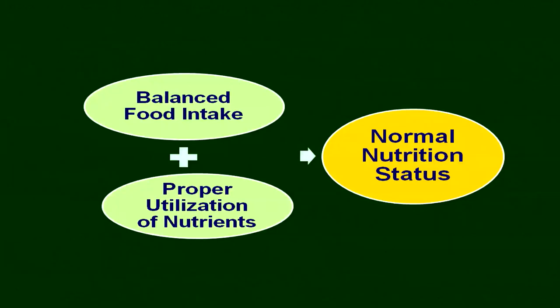There is a normal nutritional status. How do you attain it? With the balanced food intake — that is not enough. You have to have the proper utilization of nutrients which you are getting from the food. The combination of balanced food intake and proper utilization of nutrients gives you the normal nutritional status.